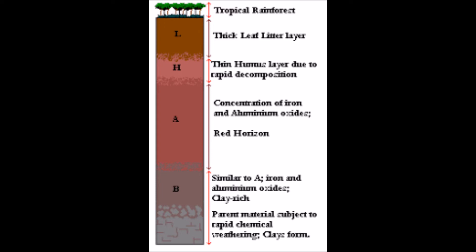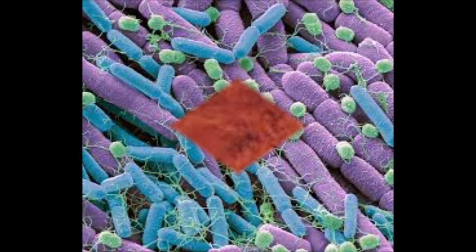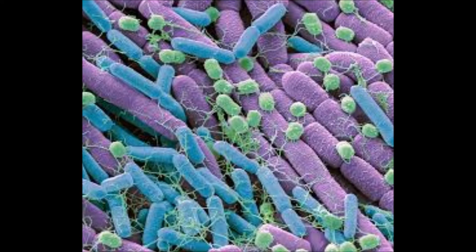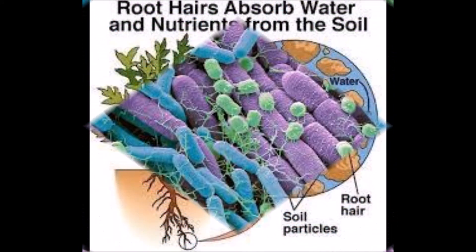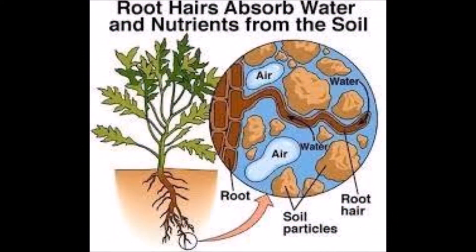The low humus content of latosols is due to the rapid breakdown of organic matter by the many bacteria that thrive in hot and wet conditions, and the rapid uptake of humus by plants. Water is important for soil as it enables plants to absorb nutrients dissolved from mineral grains and reduces soil erosion by wind because water holds soil particles together. Latosols are wet due to high rainfall in the tropical region and are very permeable. However, if forest cover is removed, the soil dries out rapidly and becomes impermeable and useless for farming.